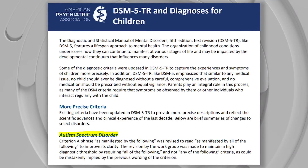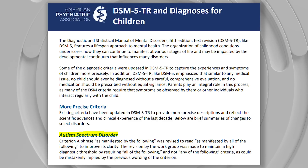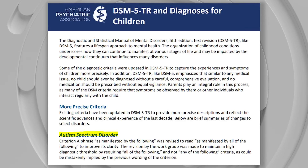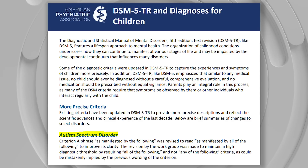They do have a note on the DSM-5-TR and diagnoses for children. Basically, they're emphasizing that similar to any medical issue, no child should ever be diagnosed without a careful, comprehensive evaluation, and no medication should be prescribed without equal vigilance. Parents play an integral role in this process, as many of the DSM criteria require that symptoms be observed by them or other individuals who interact regularly with a child. Distinct criteria have been updated to provide more precise descriptions, reflect scientific advances, and clinical experiences. The autism spectrum disorder criterion was changed to 'manifested by all of the following' to improve clarity and maintain a high diagnostic threshold.